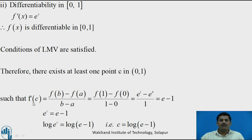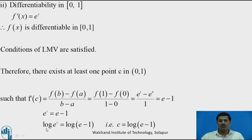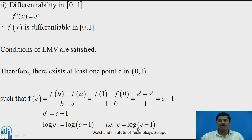On the left-hand side, f'(c) = e^c, so we have e^c = e - 1. To find c, we apply log to both sides: c = log(e - 1). This is the required point c in the interval (0, 1).